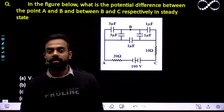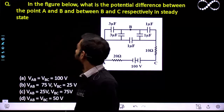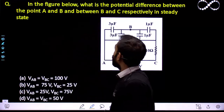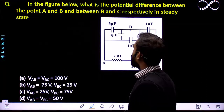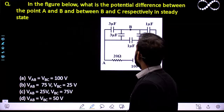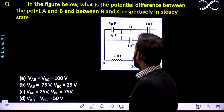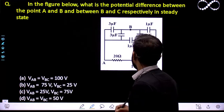Hello students, let us see this question here. In the figure below, what is the potential difference between the point A and B, and between B and C respectively in steady state?